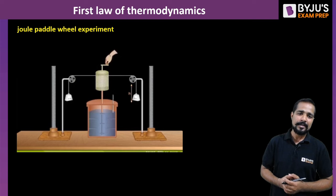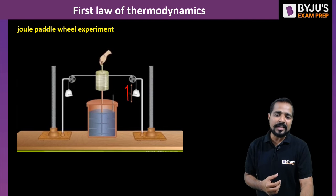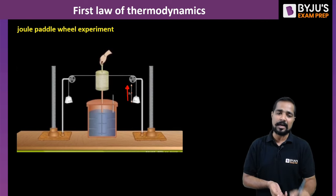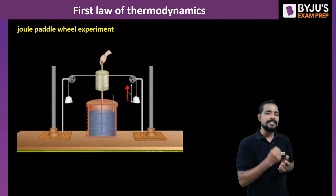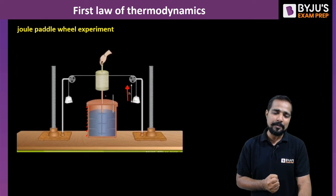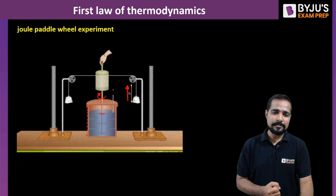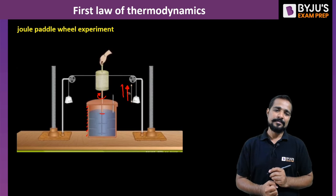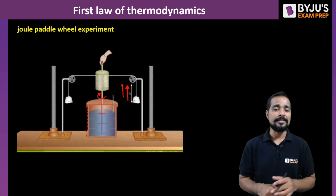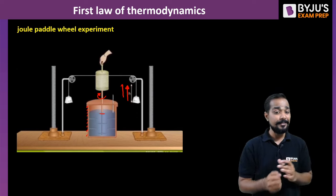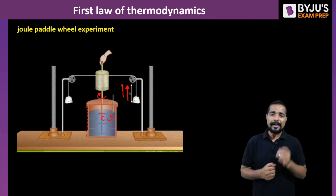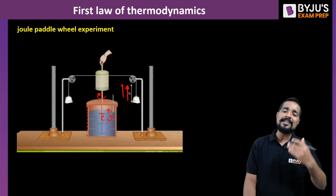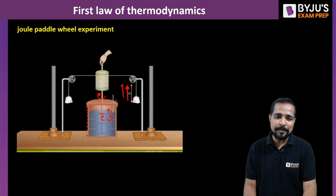In the Joule paddle wheel experiment, when a weight is moving in the upward direction, there is a completely insulated chamber filled with liquid. With the help of a rod, this liquid is stirred. As the weight was lifted in the upward direction, the liquid was rotated, and it is going to increase the temperature of the system. When the temperature of the system increases, the internal energy of the system is going to increase, and that is measured by the temperature.